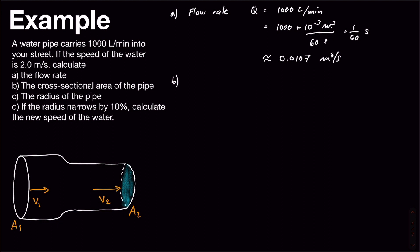For part b, we find the cross-sectional area using Q = AV. Rearranging, A = Q divided by V. Plugging in, that's 0.0167 divided by 2, since our velocity is 2 meters per second, giving approximately 8.33 times 10 to the negative 3 square meters.